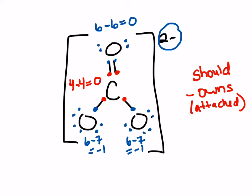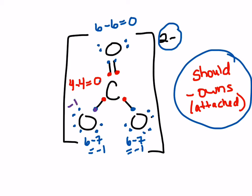The equation says 'should minus owns,' but a helpful intuition is: if there's one more electron around an atom than it should have, it gets a minus one charge — because we're used to the idea that gaining electrons makes something negative. And if it has fewer electrons around it than it should, it's positive.